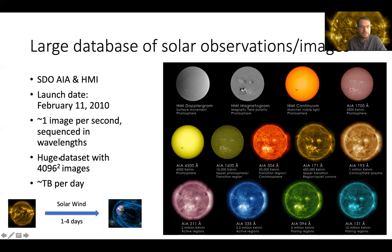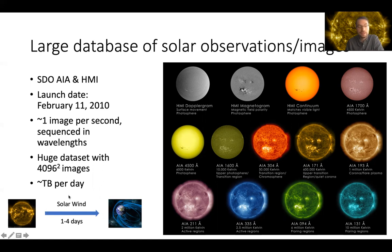This is a huge data set. The highest resolution is 4,000 square images, so this is really terabytes of data per day. And since we look at the solar images, we can have an early warning for solar events that arrive only one to four days later.